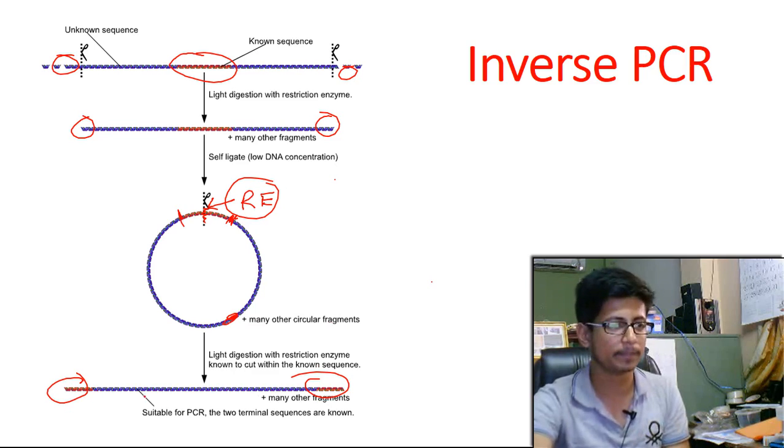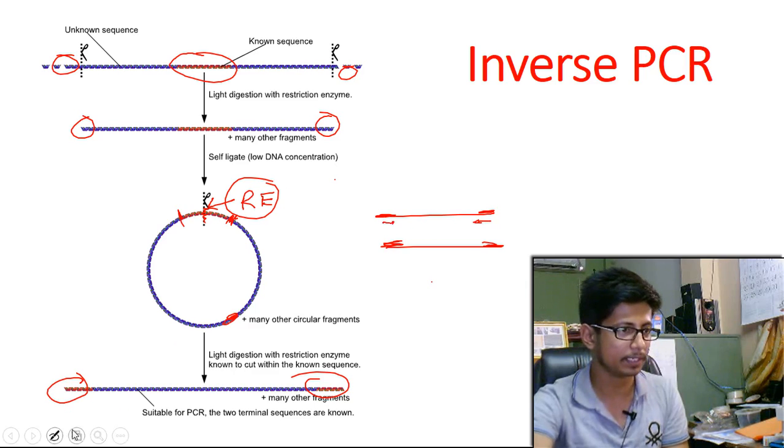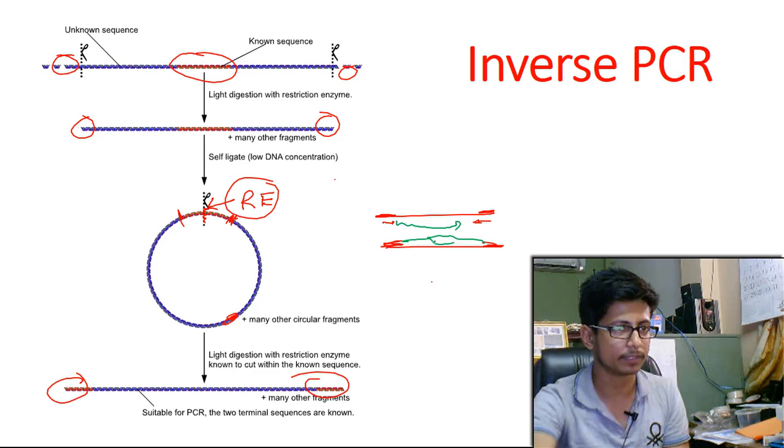Then we design the primer. It will separate those DNA strands from each other. These are the known segment at the end point and we design the primer. The primer will be annealed. Let me take another color here.